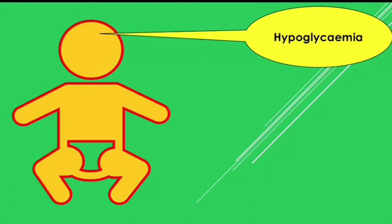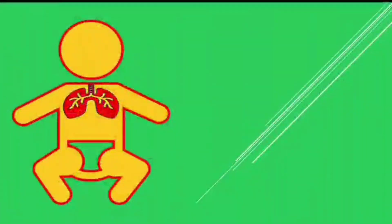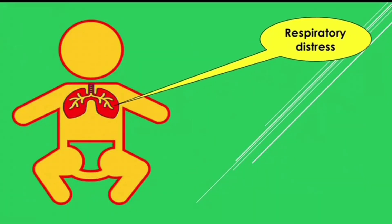Hypoglycemia is another manifestation. You have to screen these babies frequently for hypoglycemia. The reason is explained by the Pedersen hypothesis: maternal hyperglycemia leads to fetal hyperinsulinemia. In these children we have to maintain blood sugar more than 45 milligrams per deciliter.